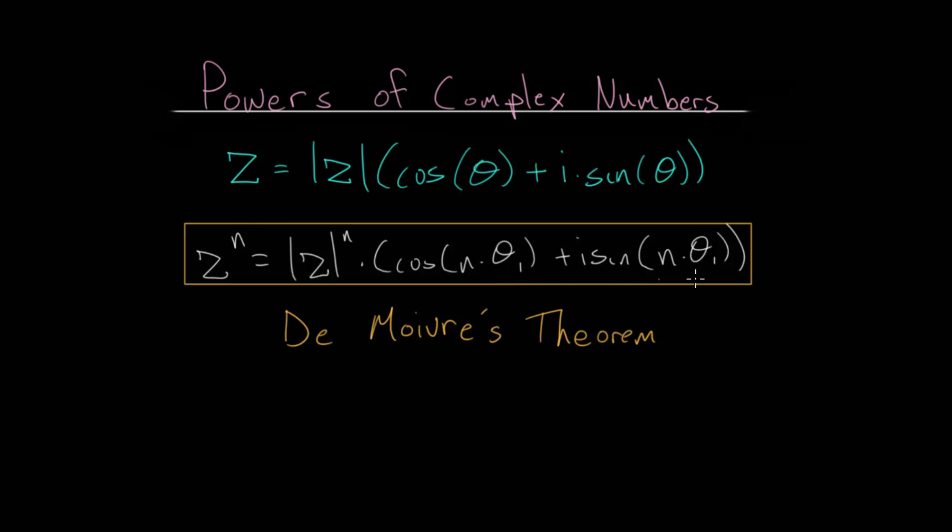And what I want to do is look at a different way to derive this formula using Euler's formula. And remember that Euler's formula is essentially this part of our complex number in polar form. It's the direction of the complex number.